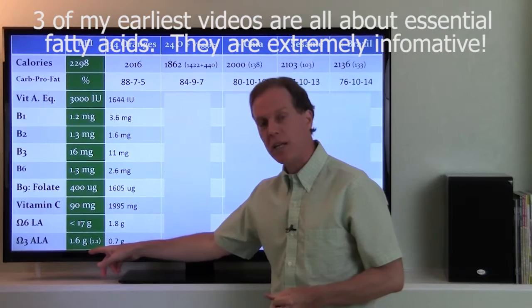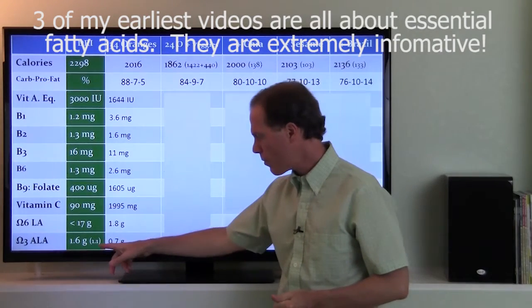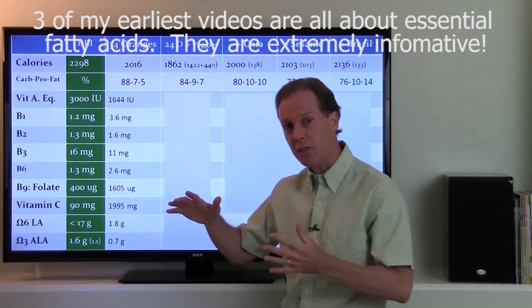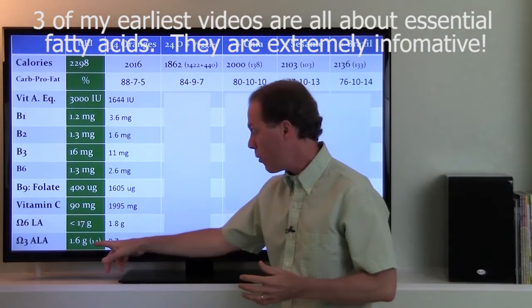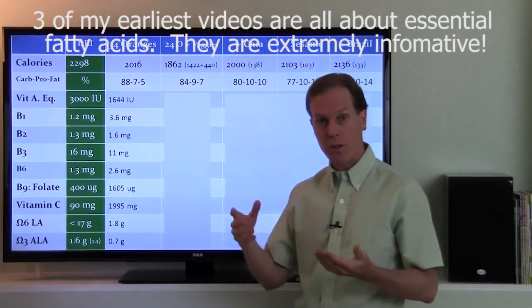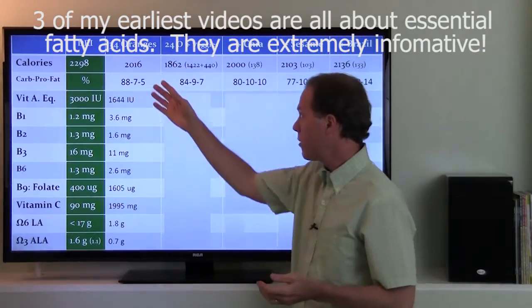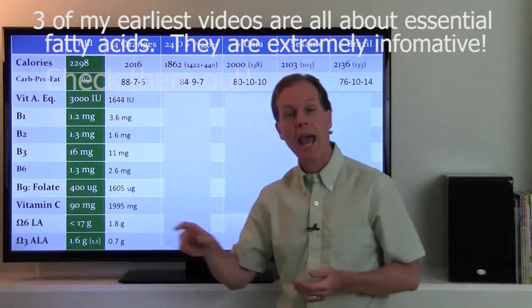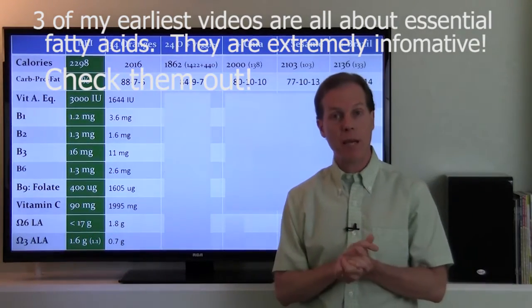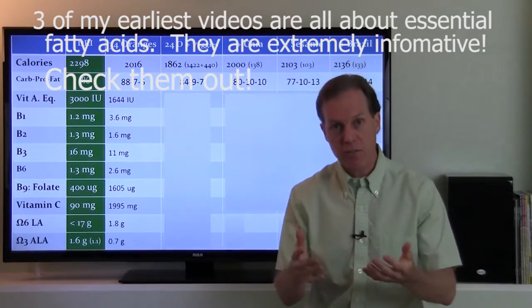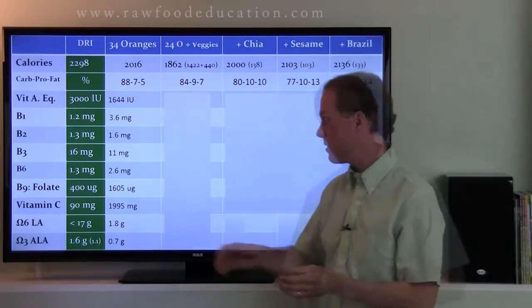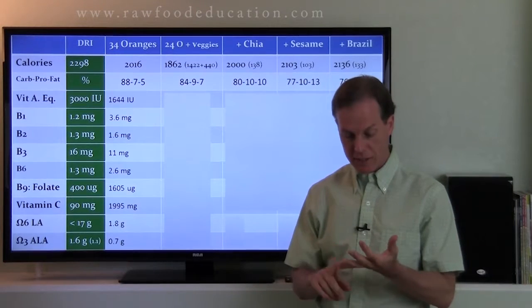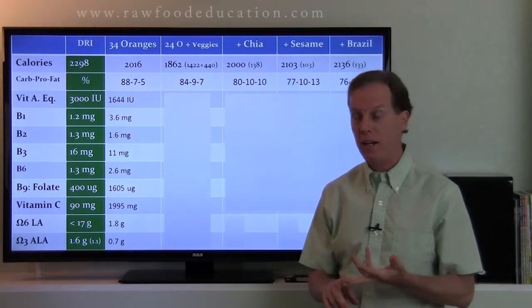So I got maybe a little more than half of what I really need from the oranges. Now, omega-3s are so important for so many things. I need about 1.6 grams a day. I like to get at least two, to tell you the truth. Women need about 1.1 according to the DRIs. From 2000 calories worth of oranges, I got about 0.7. I only got about half of what I need for omega-3s. So I'm actually deficient in fatty acids in addition to some of those minerals we saw in the last episode like selenium, zinc, and iron.